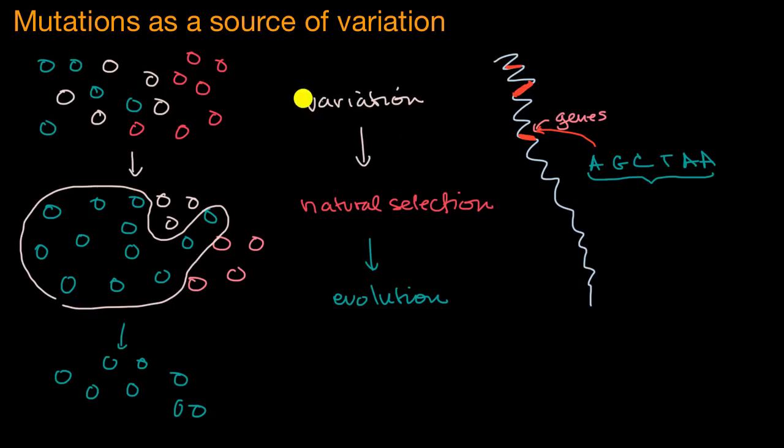Now there's two primary sources of variation. One source of variation is sexual reproduction. Now not all organisms reproduce sexually, but many of the ones that we know, including human beings, do.